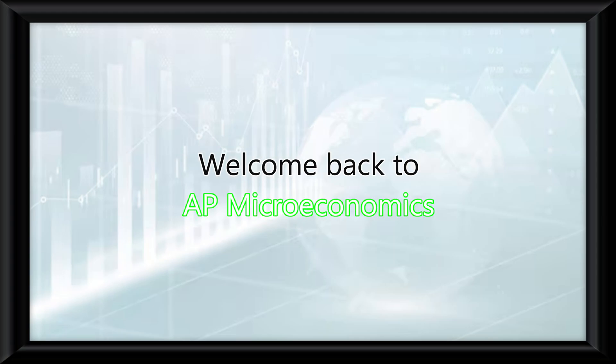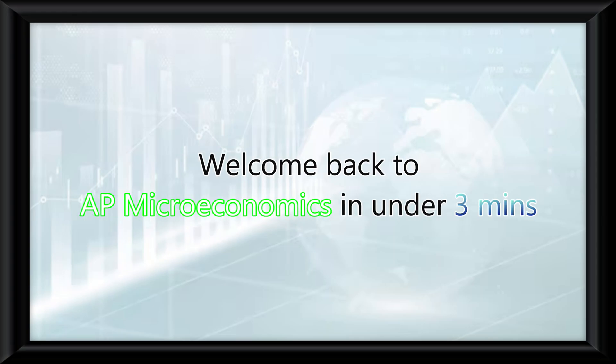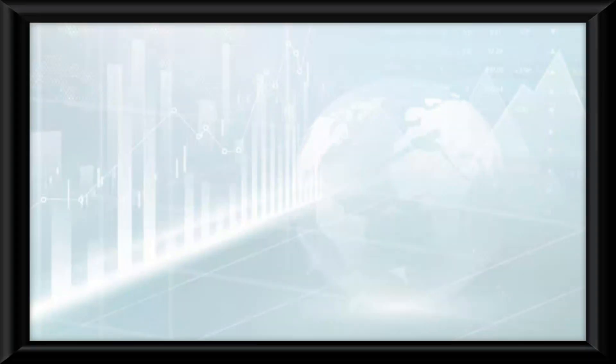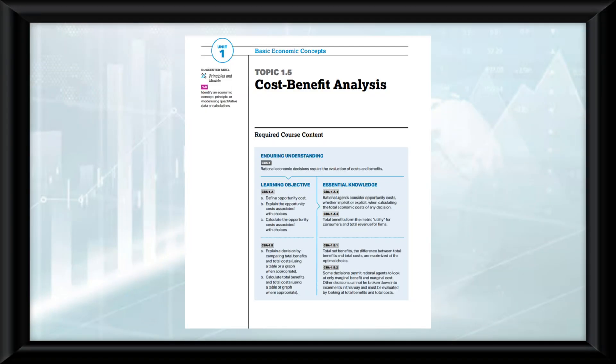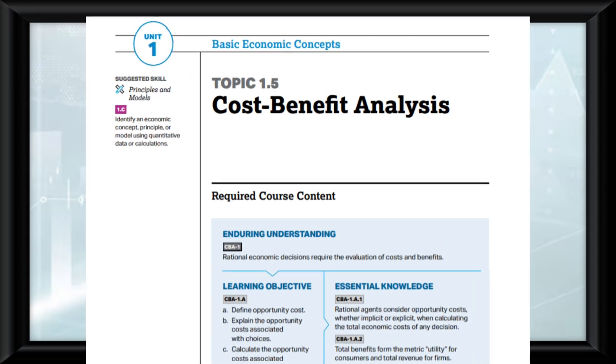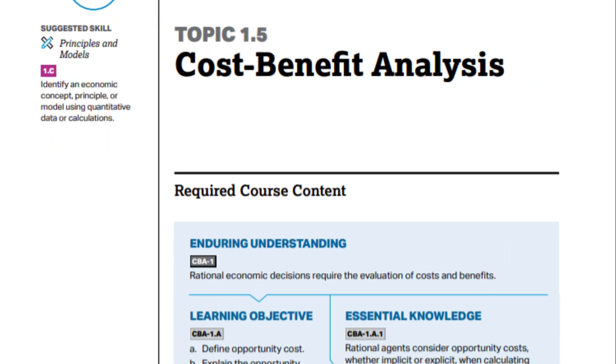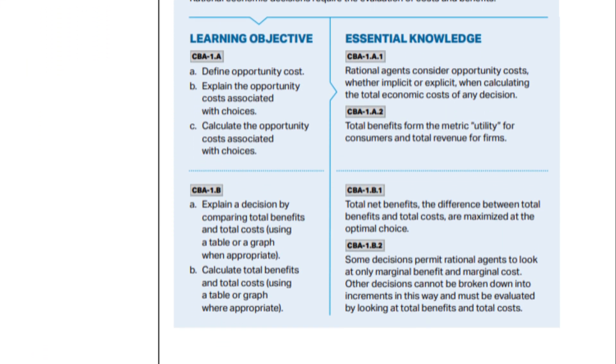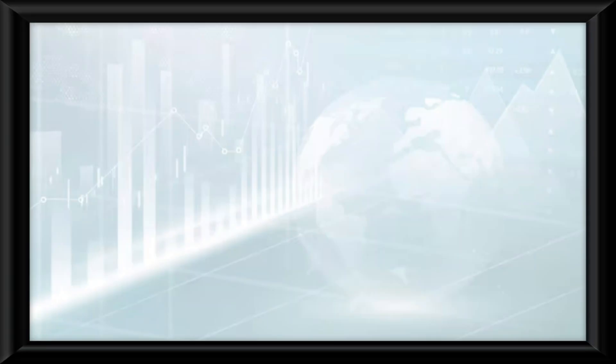Welcome back to AP Microeconomics in under 3 minutes. No time for intros, let's get into it. Topic 1.5 is all about the concept of cost-benefit analysis in economics. So let's start with the definition.